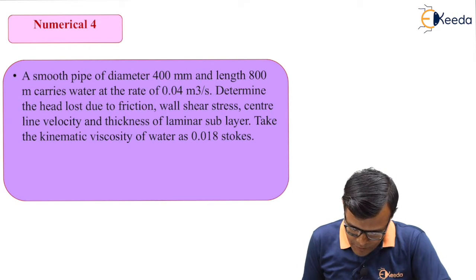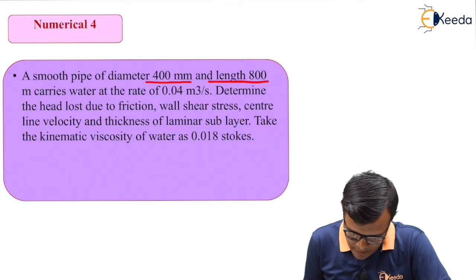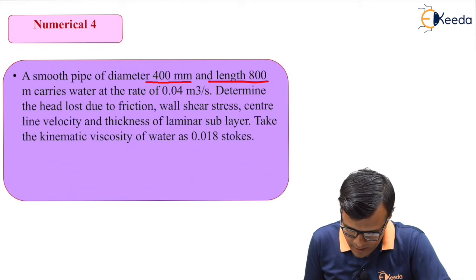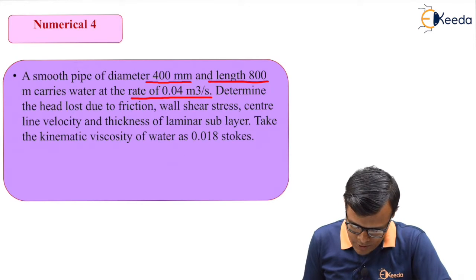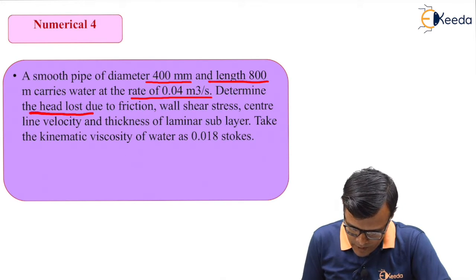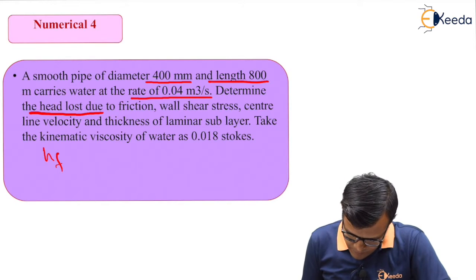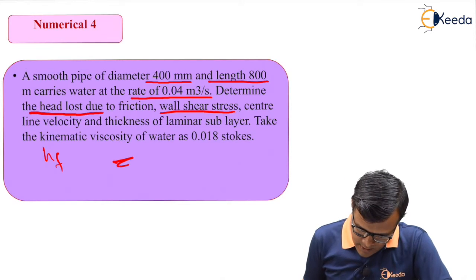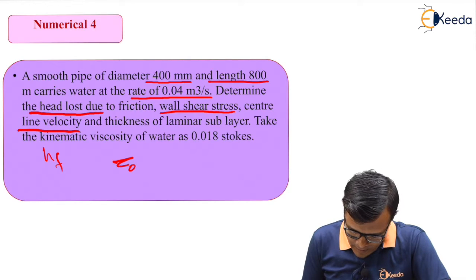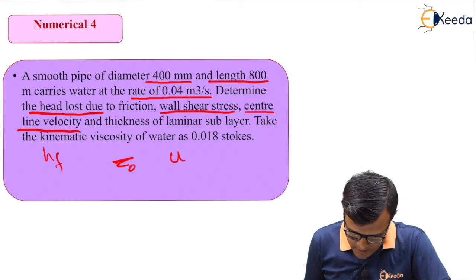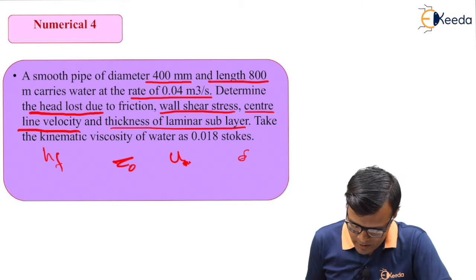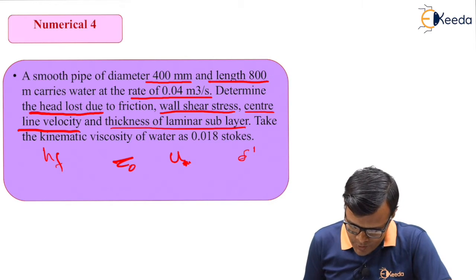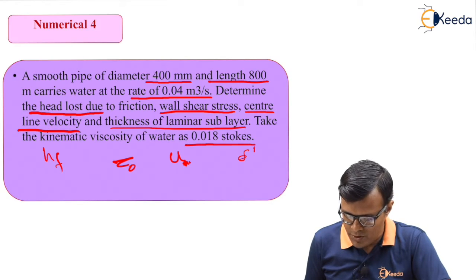A smooth pipe of diameter 400 mm and length 800 meters carries water at the rate of 0.04 m³ per second. Determine the head loss due to friction (hf), wall shear stress (τ₀), center line velocity (umax), and thickness of laminar sublayer (δ'). Take the kinematic viscosity of water as 0.018 stokes.